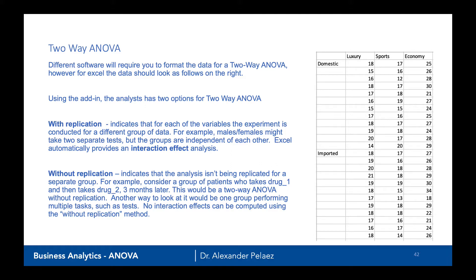Without replication indicates that the analysis isn't being replicated for a separate group. For example, consider a group of patients who take drug one and then take drug two three months later — that's a two-way ANOVA without replication. Another way to look at this: one group performing multiple tasks or tests at different time points. However, if you do this, you cannot compute interaction effects, which we'll discuss a little bit later.